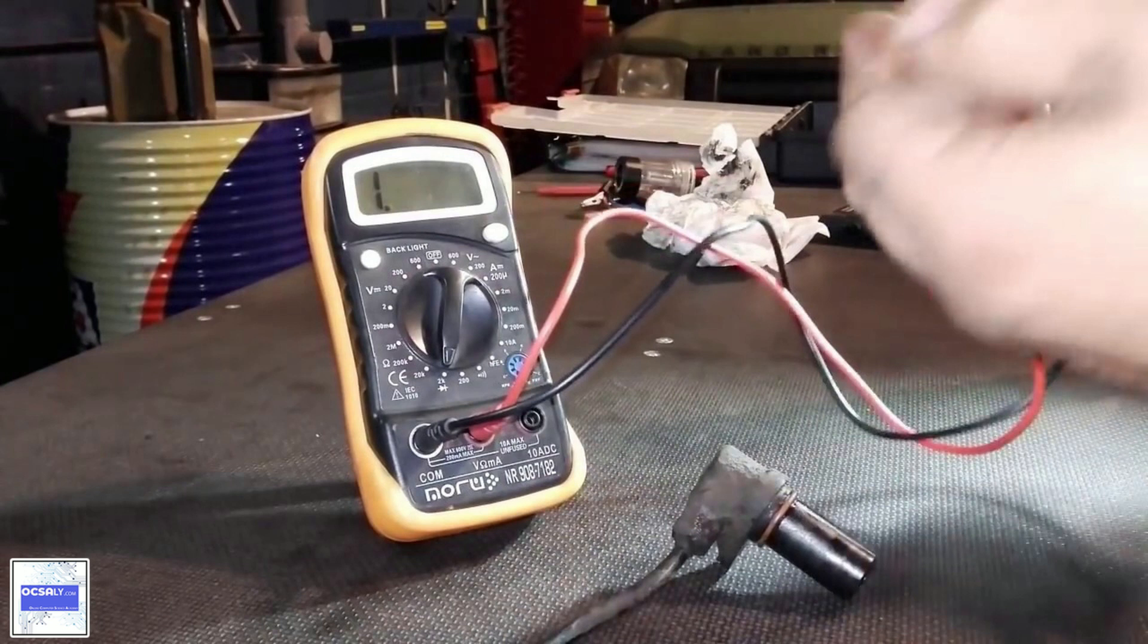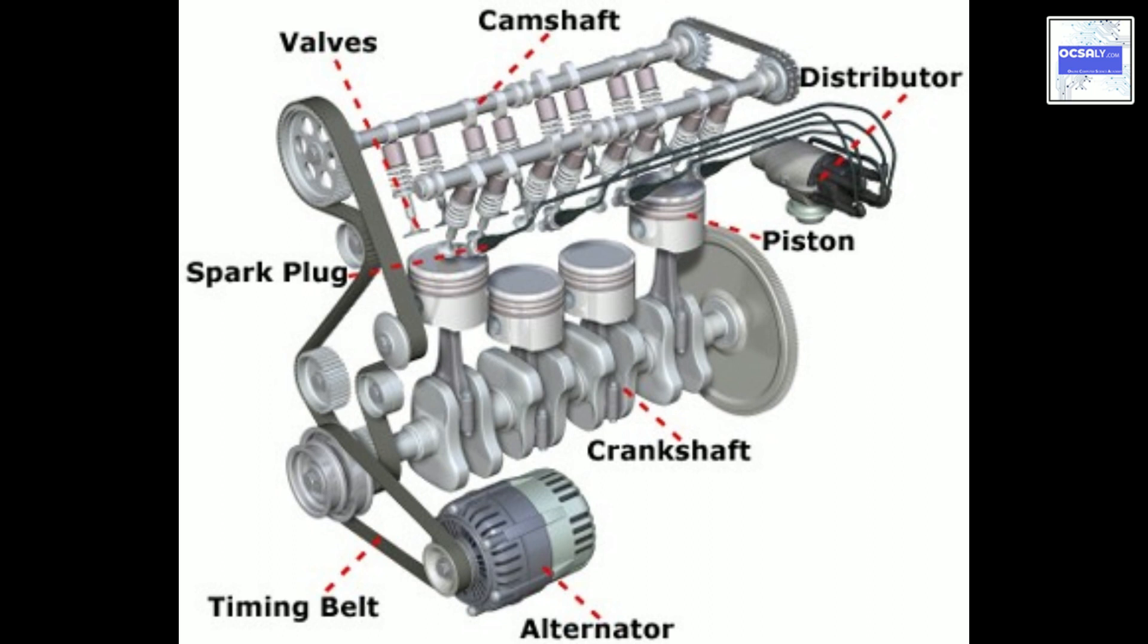Modern cars use the Hall effect sensors. A pick-up coil type sensor has a two-pin connector.